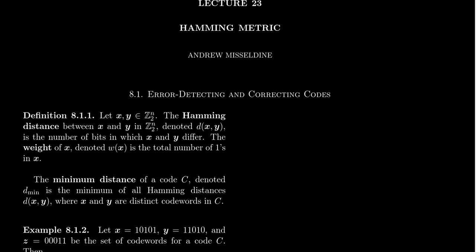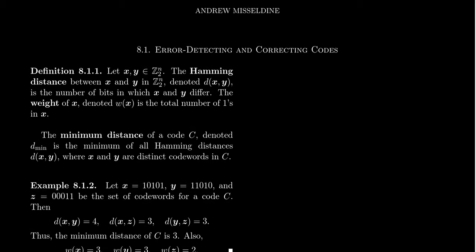So in order to do that, we're going to actually introduce what's known as the Hamming distance, or sometimes called the Hamming metric. And so this is something that's very common with linear algebra on vector space is we want a notion of distance, of norm, of length. So we use some type of distance function, our norm function, to very well do that.